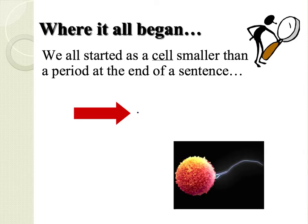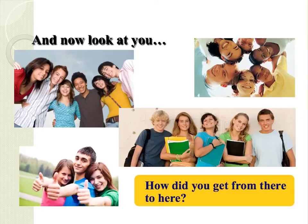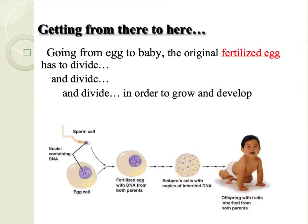We have to start from the very beginning. We all started as a cell, smaller than a period at the end of a sentence. How did you get from there to here? Well, getting from an egg to a baby to a teenager and to an adult takes many, many cell divisions.